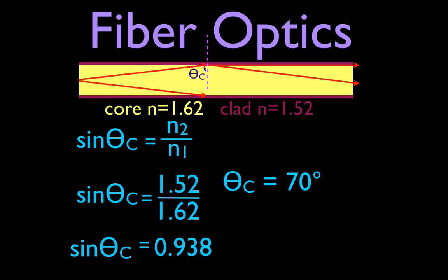You can do the same thing when you shine the light down the other direction — it reflects off that surface as long as the angle is greater than 70 degrees, and all that light will be reflected back in. This cone here is often referred to as the cone of acceptance. So that's how you calculate the critical angle: use the equation sin(θc) = N2/N1, the smaller index of refraction divided by the larger index of refraction, and that gives you the angle. It's relatively straightforward.